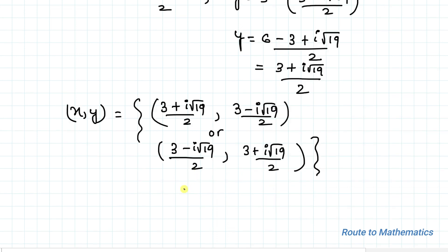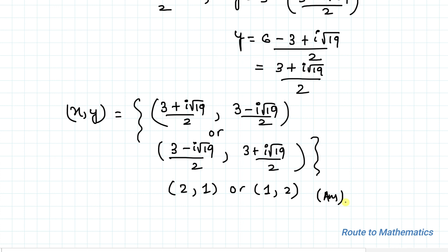So we found four possible ordered pairs that satisfy the given system of equations: the real pairs (2, 1) and (1, 2), and the complex pairs ((3 + i√19)/2, (3 − i√19)/2) and ((3 − i√19)/2, (3 + i√19)/2). I hope you understood the solution. Thanks for watching — please subscribe to my channel and hit the like button for more such interesting videos.